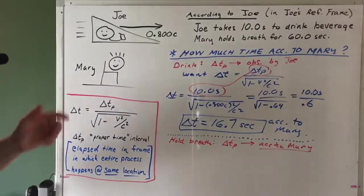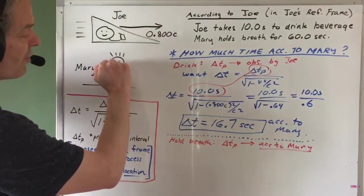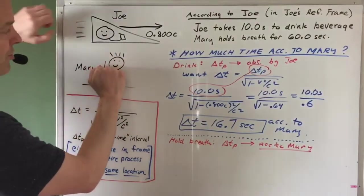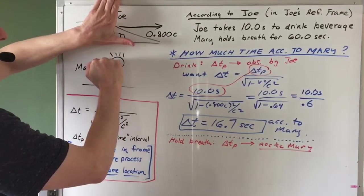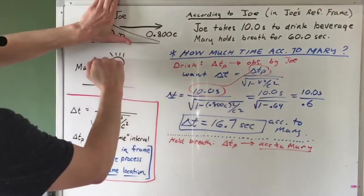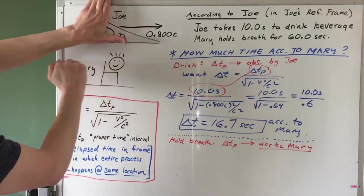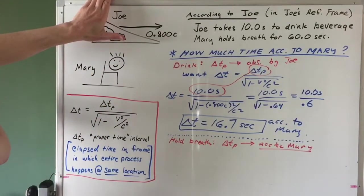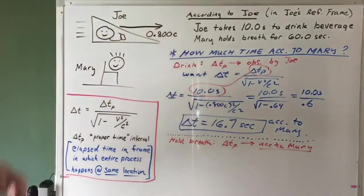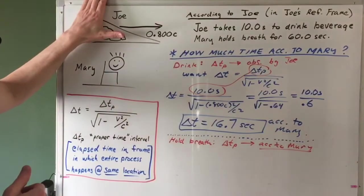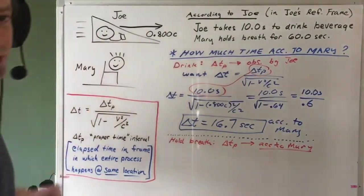Let's verify that Joe does not observe the proper time for the holding-the-breath process. Mary starts holding her breath right as Joe zooms past — they coincide, and Mary starts holding her breath. From Joe's perspective, Mary's coming this way, starts holding her breath, continues on, and finishes holding her breath. The beginning of the process happened at the origin of Joe's coordinate system, but at the end Mary is far to the left. So it does not happen at the same location in Joe's coordinate system, but it does in Mary's reference frame.